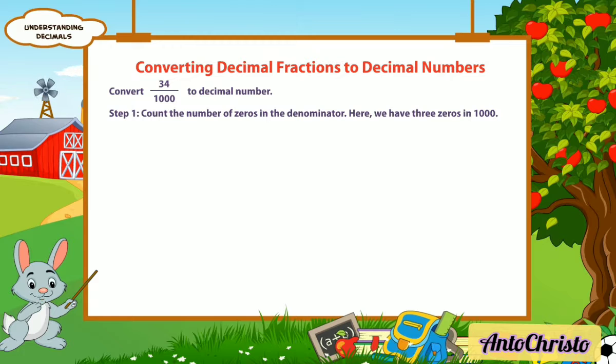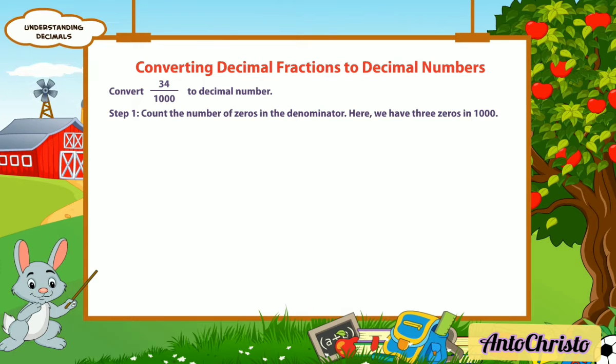Step 1: Count the number of zeros in the denominator. Here we have three zeros in 1000.